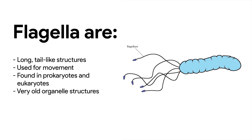Some cells have organelles that extend outside the main structure, like flagella and cilia. Flagella are used to help the cell get around. A flagellum is like a tail, which can be used to propel the cell — in effect, it's swimming. Some organisms have two or more flagella, which can be used in a corkscrew-like movement to make the cell move more efficiently. Both prokaryotes and eukaryotes can have flagella, though prokaryotic flagella have a simpler structure. Flagella are a very old type of organelle.